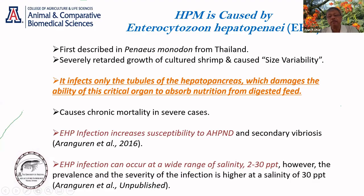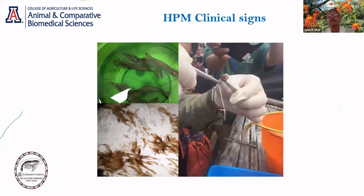We did a survey in India with respect to EHP prevalence, and what caught my attention was that we could detect the pathogen in shrimp collected from farms with a wide range of salinity — all the way from almost freshwater to as high as 30 PPT and above. That also poses some challenge. From an evolutionary perspective, this highlights how potent and competent this pathogen is in surviving in a wide range of environments while infecting a very critical organ.